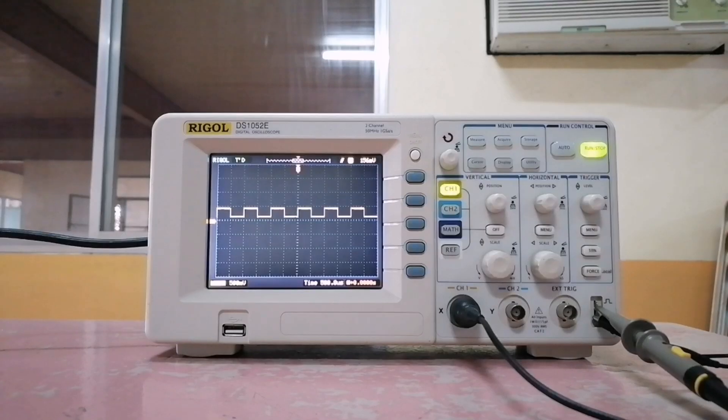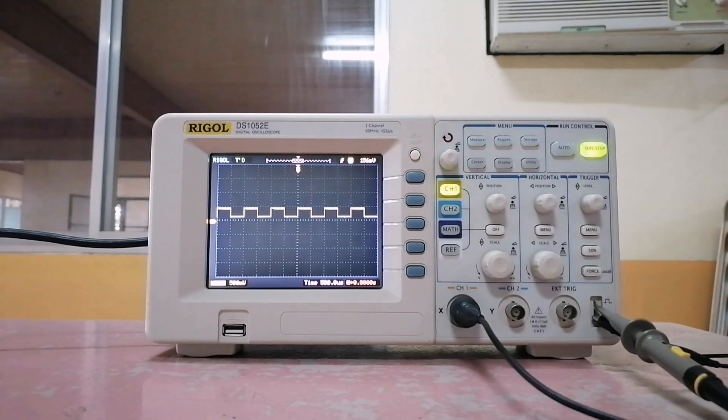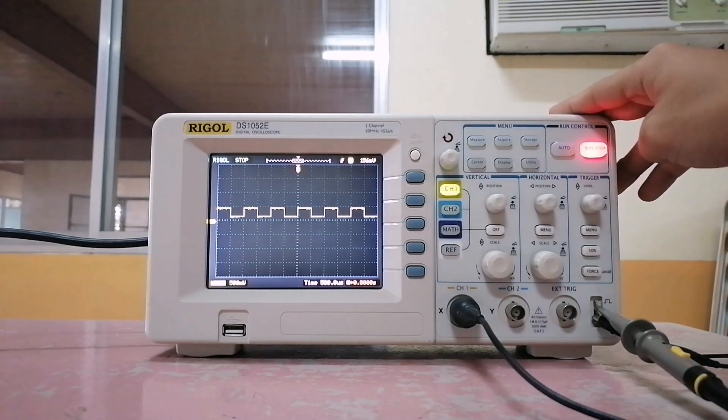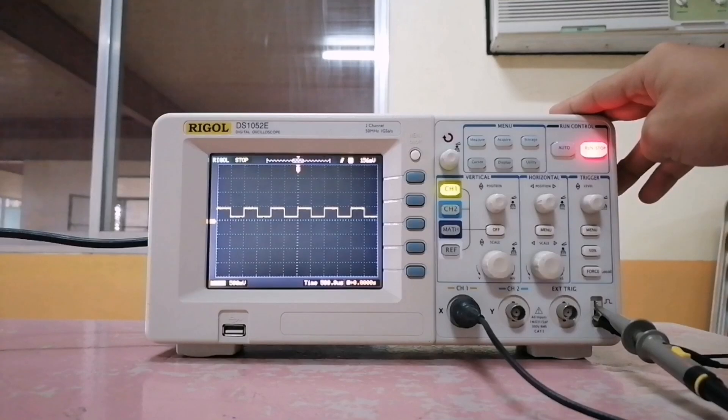The horizontal control allows you to control the time axis. To demonstrate the horizontal controls, I'll pause the scope.